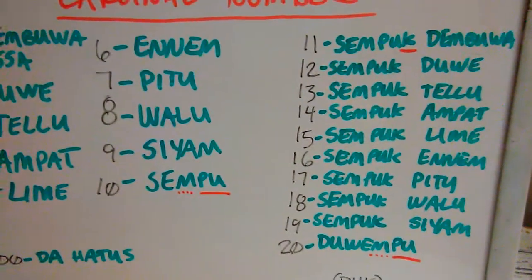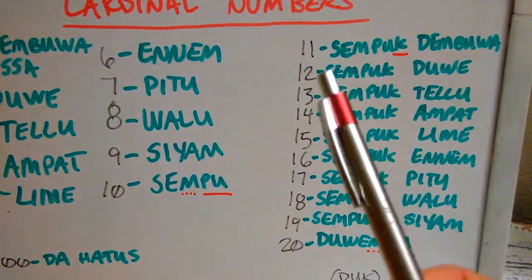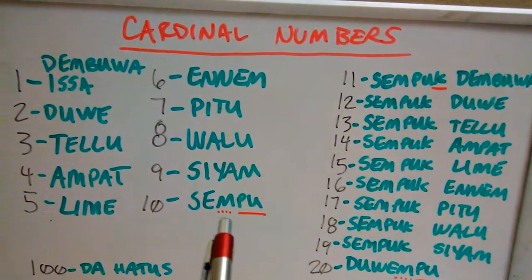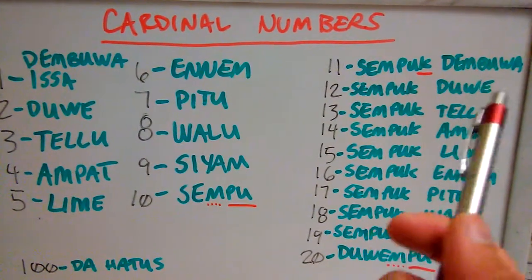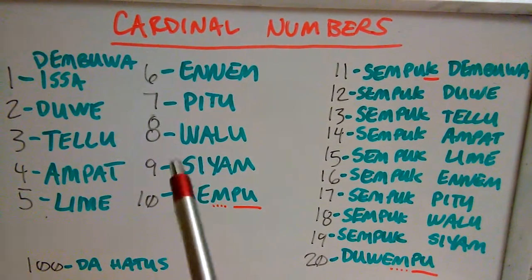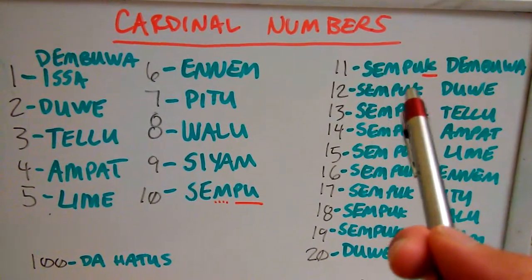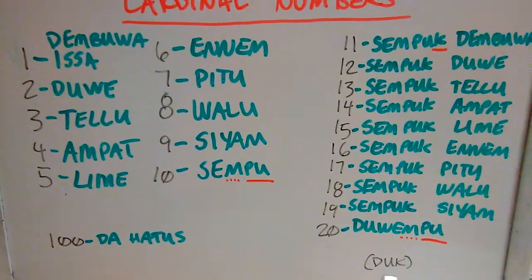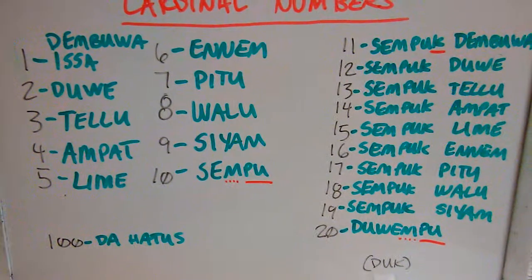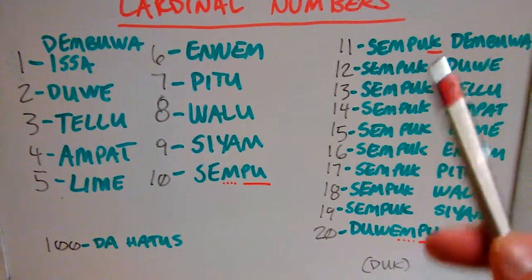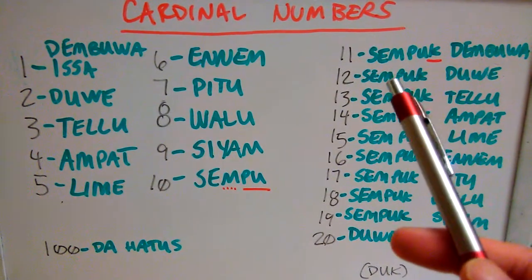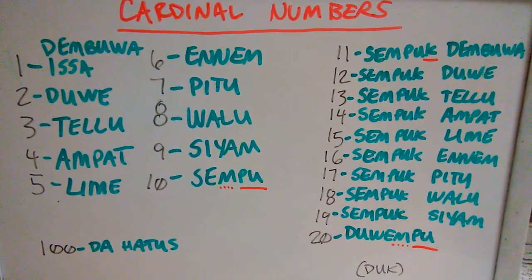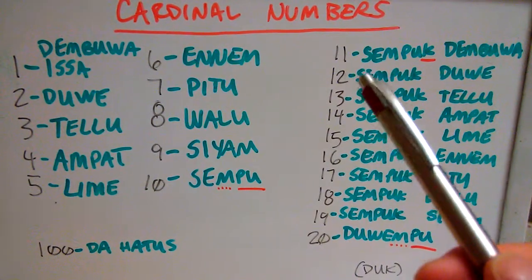From 11 to 20, we have Sempuk Dembuwa. From Sempu, we get Sempuk Dembuwa, which means one. So it's ten and one. That K at the end is actually short for Duk — and Duk in the Yakan language means 'and.' So: Sempu + Duk + Dembuwa = ten and one, which we know as 11.